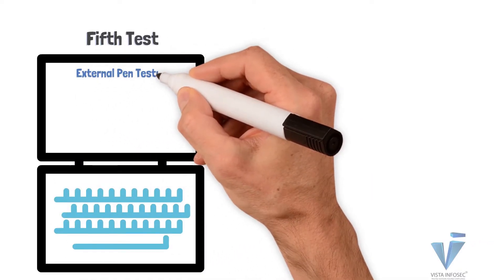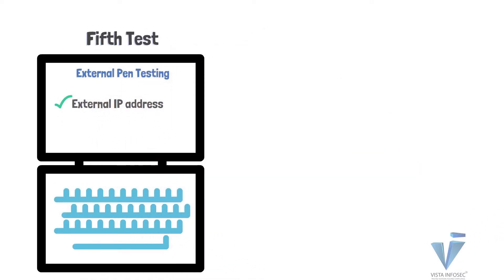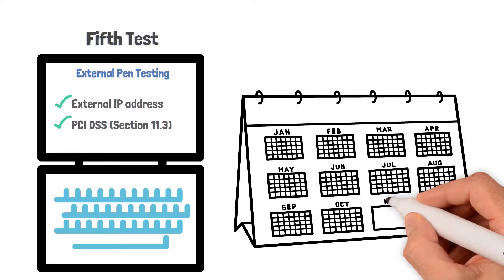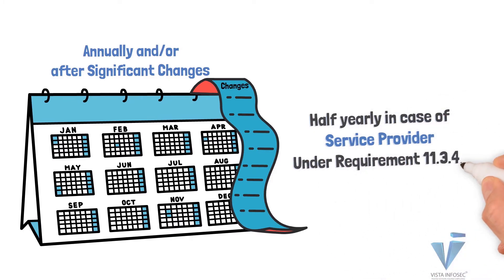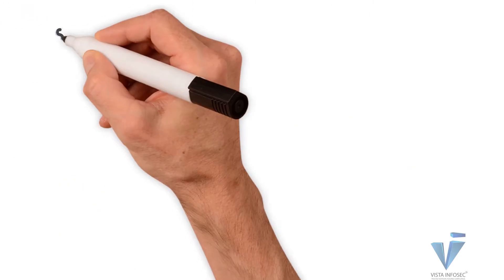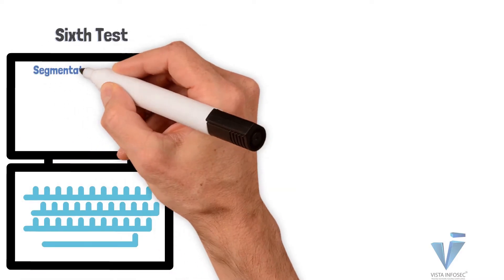The next is an external penetration test of your externally exposed IP addresses. Note: an ASV scan and an external pen test are two separate things. The external pen test can be done by any qualified company — not necessarily an ASV. This is required annually and/or after significant changes. For service providers, it must be done twice a year, every six months, under section 11.3.4.1.